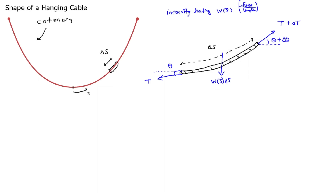Angles are important in free body diagrams. Let's say the tension force T acts at angle theta below the horizontal, and T plus delta T acts at angle theta plus delta theta above the horizontal. Now let's consider the x-components of all the force vectors. The intensity loading has no x-component, so we're just dealing with T plus delta T times cosine of theta plus delta theta, minus T times cosine theta, equaling zero.